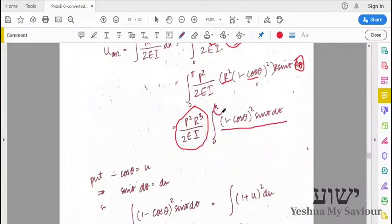So ignore the limits here for like a minute. We will just substitute (1 minus cos theta) equals u. So if we differentiate this, we will get sin theta d theta is equal to du.